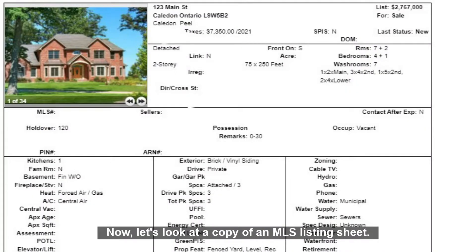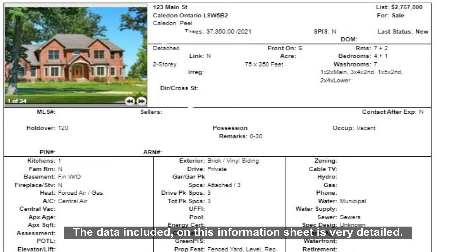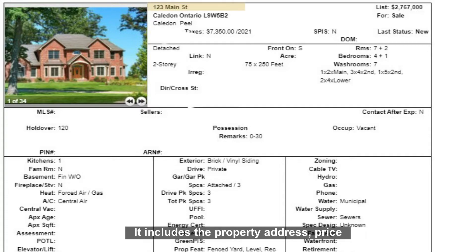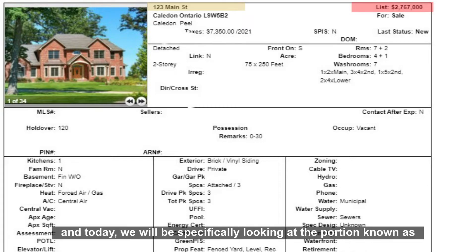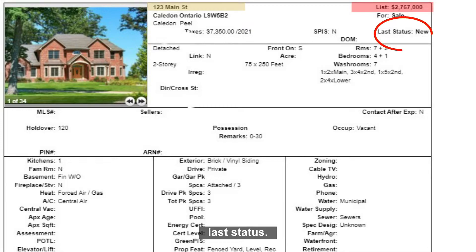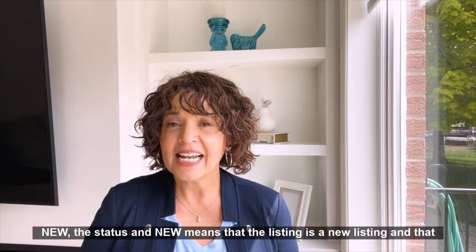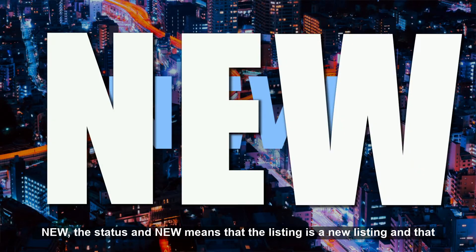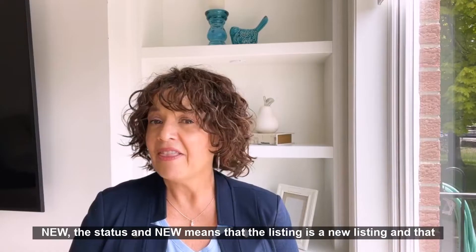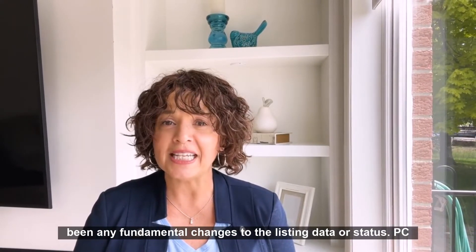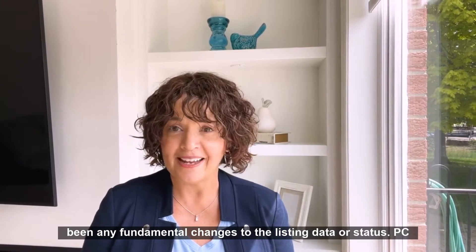Now let's look at a copy of an MLS listing sheet. The data included on this information sheet is very detailed. It includes the property address, price, and today we will be specifically looking at the portion known as last status. NEW means that the listing is a new listing and that there has not been any fundamental changes to the listing data or status.